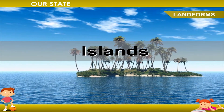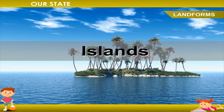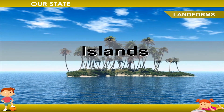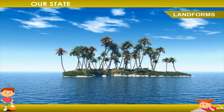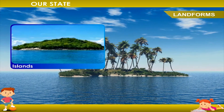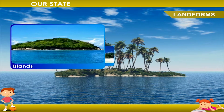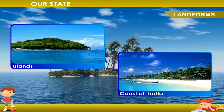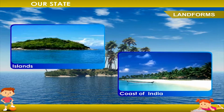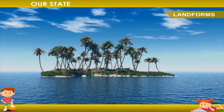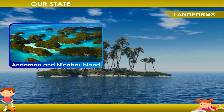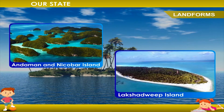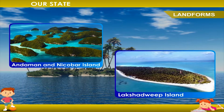The Islands are large land areas surrounded by water. There are many islands, some near and some far from the coast of India. There are two main groups of islands — the Andaman and Nicobar Islands in the Bay of Bengal and the Lakshadweep Islands in the Arabian Sea.